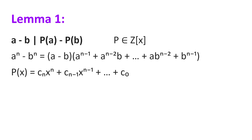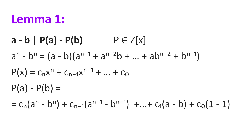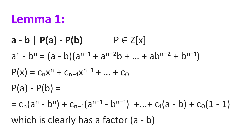Now, let our polynomial p be such that p(x) = c_n·x^n + c_(n-1)·x^(n-1) + ... + c_0, where c_0, c_1, c_2, ..., c_n are all integer constants. Then p(a) - p(b) = c_n·(a^n - b^n) + c_(n-1)·(a^(n-1) - b^(n-1)) + ... + c_1·(a - b). We clearly see that each term has a factor of (a^k - b^k), which in turn has a factor (a - b), and so (a - b) divides p(a) - p(b).